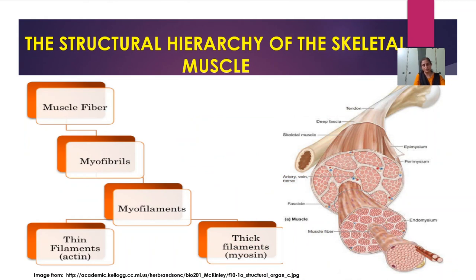Now, the structural hierarchy of skeletal muscles: the thick filaments, which are myosin, and the thin filaments, which are actin, together form the structure called myofilaments. Bundles of myofilaments form the myofibrils. These bundles of myofibrils combine to form a large bundle, which is the muscle fiber, which gets attached to the bones with the help of tendons.